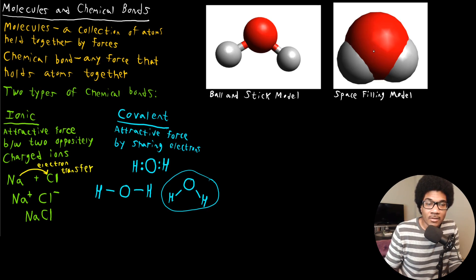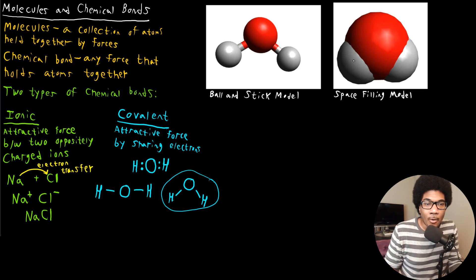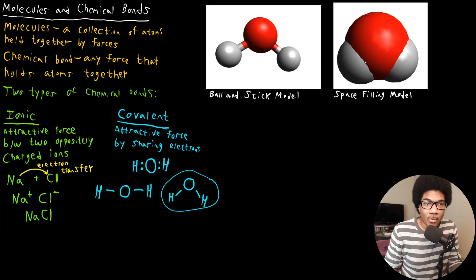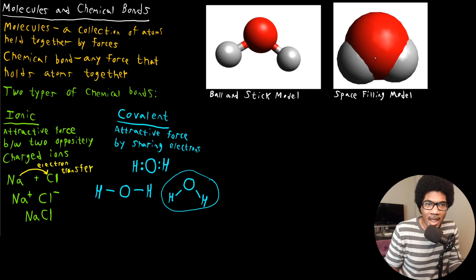The space filling model is a different one that actually conveys better volumetric information. It shows all the atoms in their relative positions, but gives a better approximation of how much space each individual atom takes up — which is really lost in the ball and stick model. When we're talking about sharing electrons, we're really talking about a lot of overlapping between the electron clouds that different atoms have. So the space filling model does a better job showing the relative space that all of the different atoms in the molecule take up.